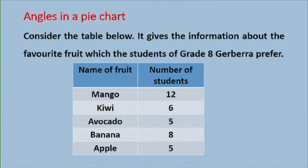Angles in a pie chart. Consider the table below. It gives information about the favorite fruit which the students of Grade 8 Gerbera prefer. In the table, Mango has 12 students, Kiwi has 6 students, Avocado has 5, Banana has 8, and Apple has 5. We are going to use this information to draw our pie chart.